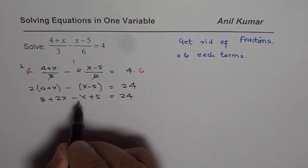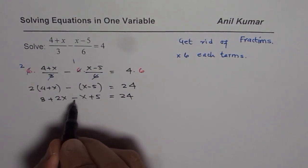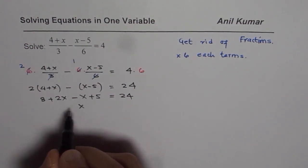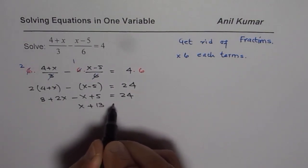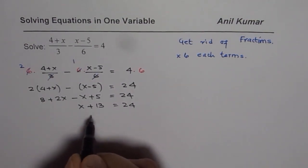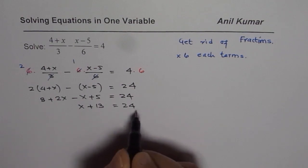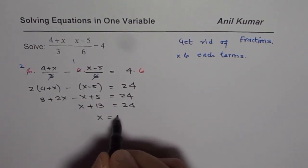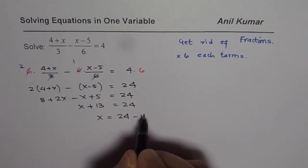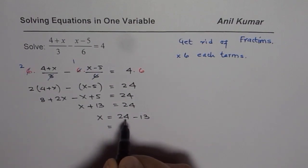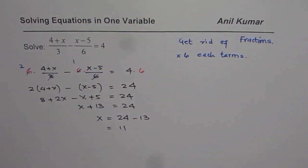Now combine the like terms. 2x minus x is x, and 8 plus 5 is 13, so x + 13 = 24. Now take away 13 from both sides. You get x = 24 - 13, and 24 minus 13 is 11. So x = 11 is the solution.